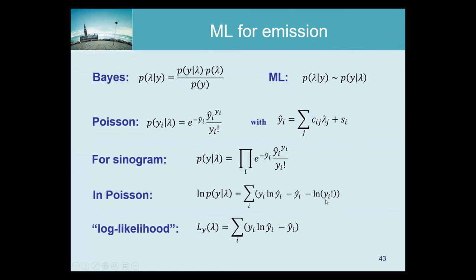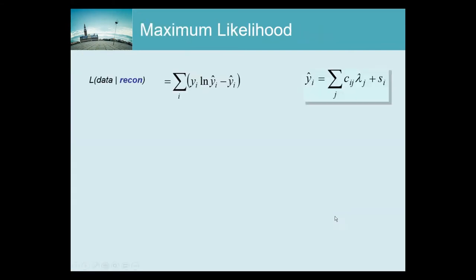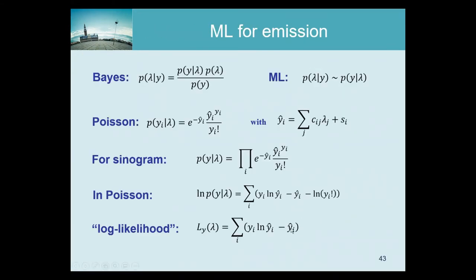After removing the constant term, the log-likelihood we maximize is: L(λ) = Σᵢ [ yᵢ log(ŷᵢ) − ŷᵢ ]. This is the standard form. Note that in the literature, papers often refer to this as 'the likelihood,' even though it is technically the log-likelihood with constant terms deleted.